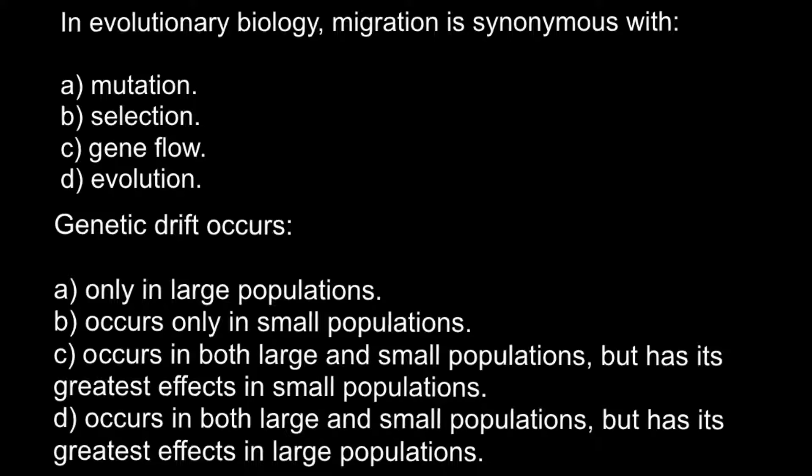And the correct answer, of course, would be C, gene flow. Because migration means movement of some individuals from one place to another one. And gene flow also means movement of the genes. Because each individual, of course, represents some collection of genes.